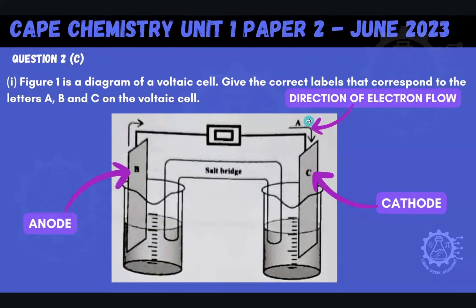Here are our labels. A — this arrow represents the direction of electron flow. We know that A would be our electrons, and because that arrow is pointing towards this metal sheet, we know that electrons come into our cathode. So we know that C should be our cathode.